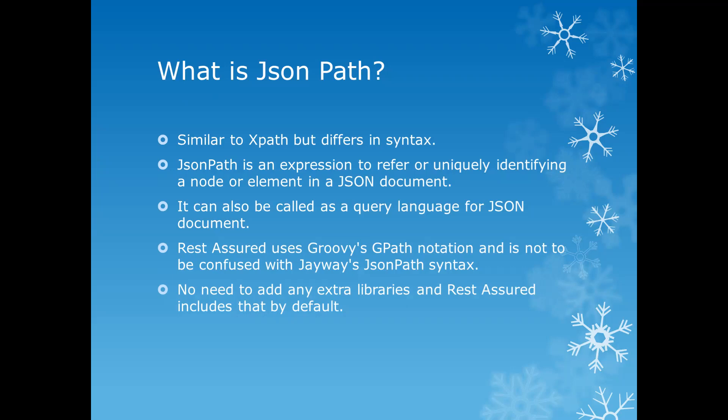JSON path is an expression to refer to or uniquely identify a node or element in a JSON document. A JSON document may contain a JSON object or JSON array. In simple terms, JSON path is an expression to identify a node in the JSON document. It can also be called a query language for JSON documents. REST Assured uses Groovy's GPath notation, and this is not to be confused with the JWay JSON path syntax.